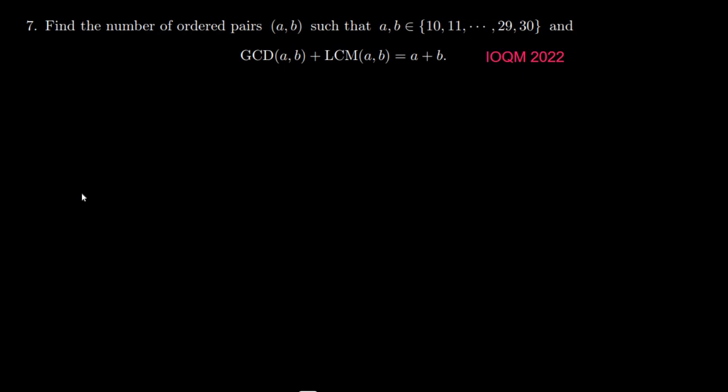It needs no advanced concepts other than 10th standard. The problem says: find the number of ordered pairs (a, b) such that a, b ∈ {10, 11, 12, ..., 29, 30} and satisfying the equation GCD(a, b) + LCM(a, b) = a + b.